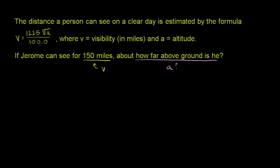So we can look at this formula for visibility as a function of altitude. We know what the visibility is, it is 150 miles, so we can say that v, or 150 miles, is equal to 1225 times the square root of a, all of that over 1000.